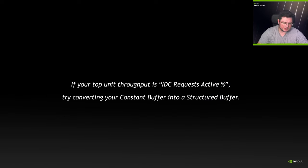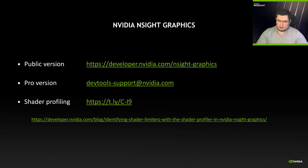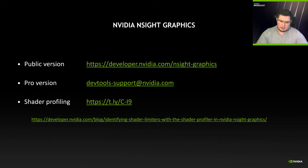So remember: when searching for opportunities to improve performance, keep an eye out for IDC requests active. If you see this, try converting your constant buffer into a structured buffer. In the description I will add a link to download the public version of Nsight Graphics. If you are a partner, please reach out to us through devtools-support at nvidia for the pro version. I will also include a link to a blog that explains in depth how to use the shader profiler. If you have any questions or would like us to cover something else, please leave a comment below.